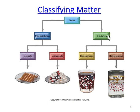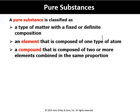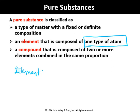Pure substances are classified into elements and compounds. Elements are composed of only one type of atom. In another video I already explained the difference between atoms and molecules. Elements are composed of atoms, and compounds are composed of molecules.